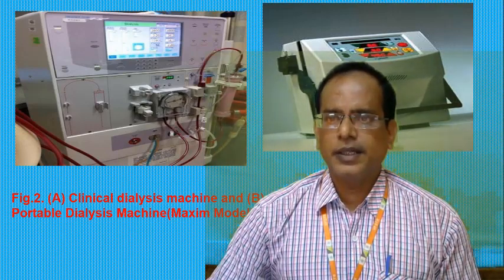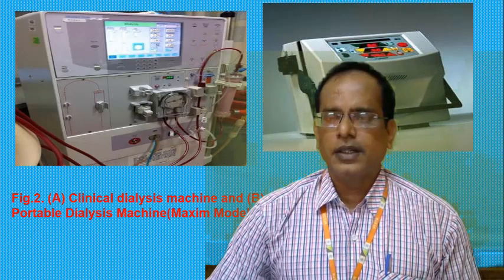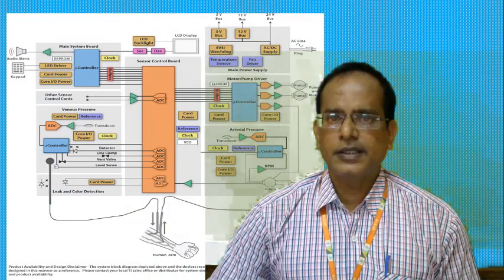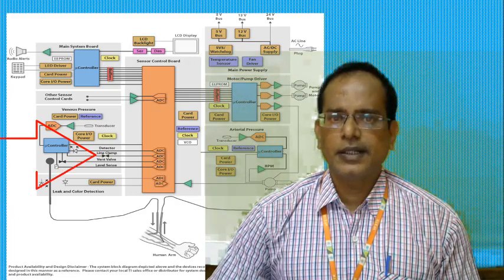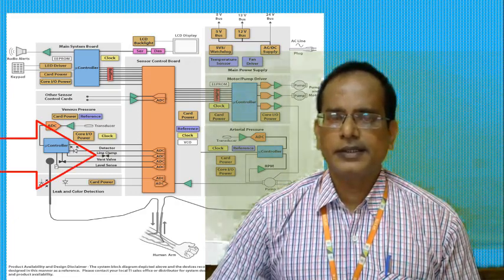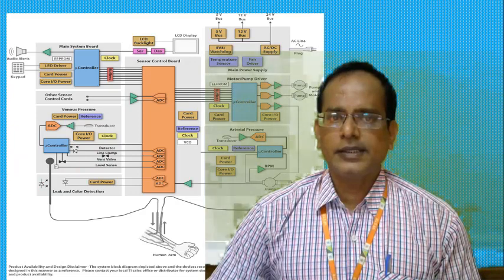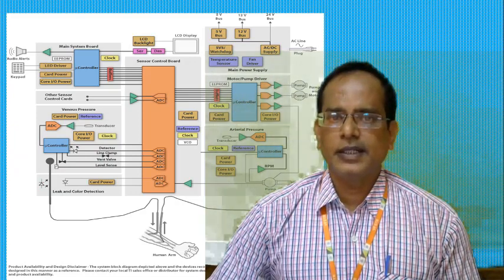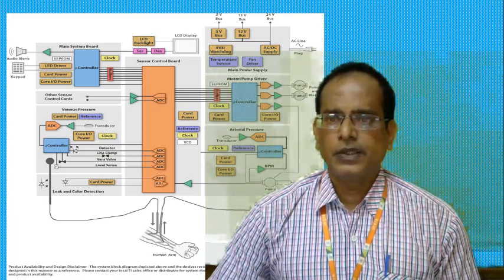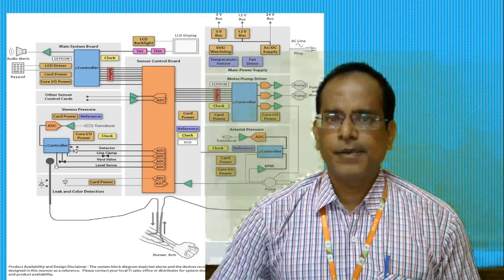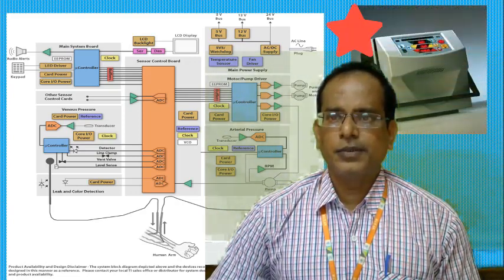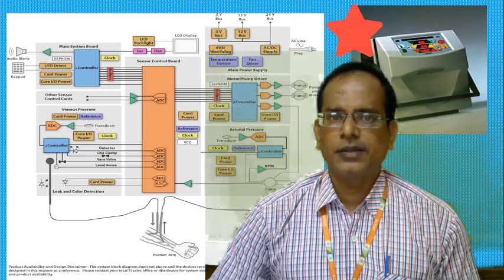Here you can see the circuit diagram of the portable dialyser machine. It contains electronic equipment and pumps that are controlled by an embedded system. This is the portable machine, and the same circuit inside has been shown here.